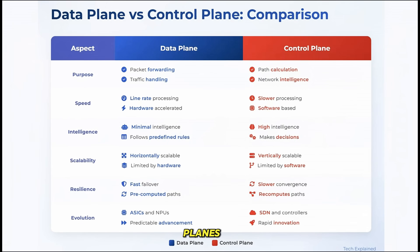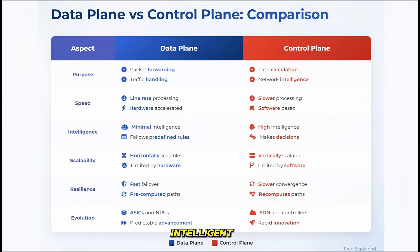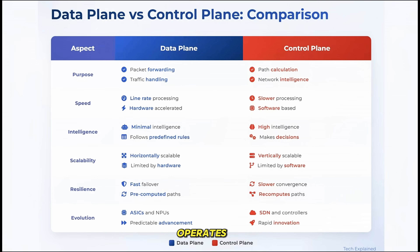To better understand these planes, let's compare them directly across several key dimensions. First, purpose: the data plane's purpose is to forward packets quickly and efficiently, while the control plane's purpose is to make intelligent decisions about where those packets should go. Speed is another major difference: the data plane operates at line speed — as fast as the hardware can handle — while the control plane operates at a much more leisurely pace, measured in milliseconds or seconds rather than nanoseconds.